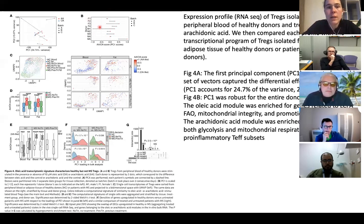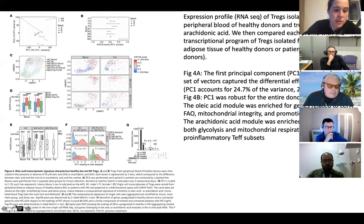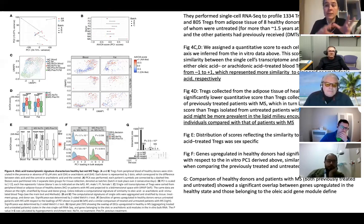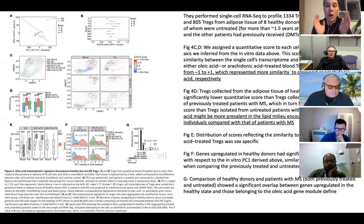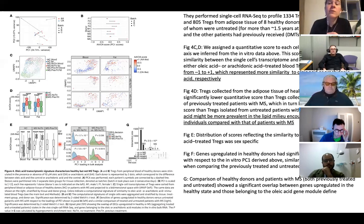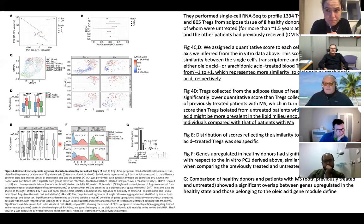Next they performed single-cell RNA-seq — not in healthy controls but in people with MS. They collected 1,334 regulatory T cells from blood and 805 from adipose tissue in eight healthy donors and eight MS patients. They then checked how these cells scored on the Principal Component 1 algorithm established from the healthy control data.